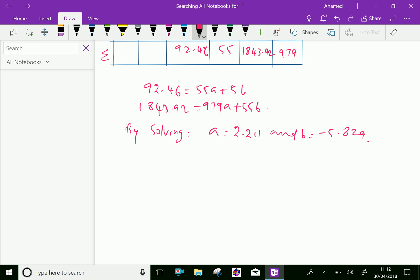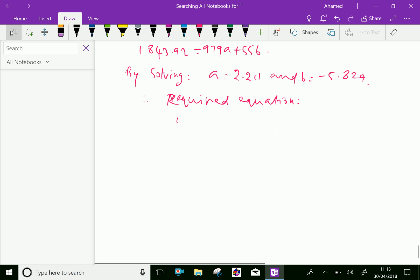So the required equation is y equals 2.211x minus 5.829 over x. We have completed the problem.